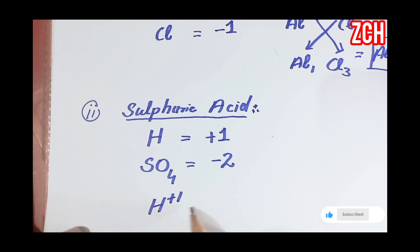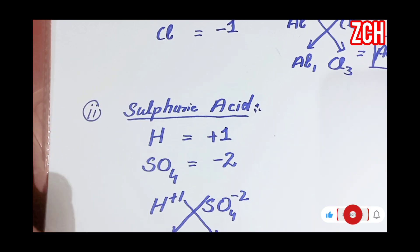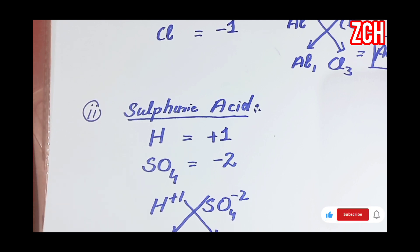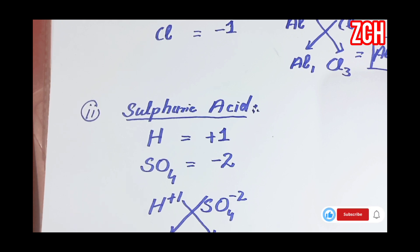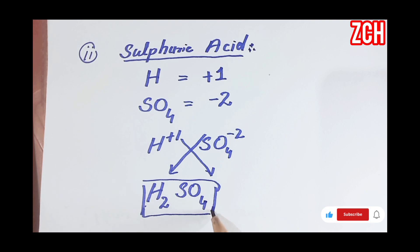We write their valencies on the top corner and cross their valencies with each other. Two comes here with hydrogen and one is with SO₄, so we get the formula of sulfuric acid as H₂SO₄. By crossing their valencies with each other, we can write the chemical formula of any compound. If you like this video please like, subscribe, and share. Thanks.